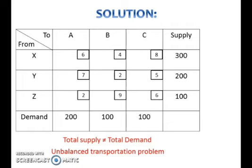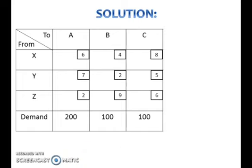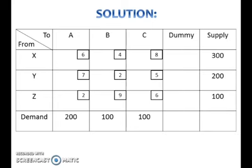Since here total demand is less than total supply, add a dummy column to the table. Write the shortage amount in the demand box and put zero transportation costs in each box in the body of the dummy column.